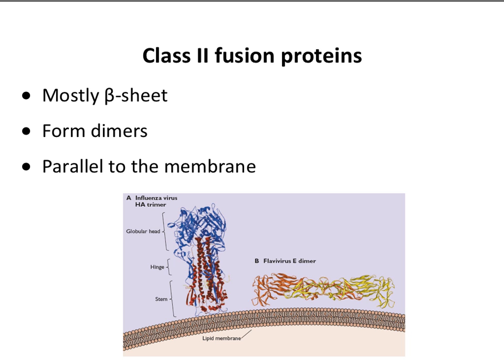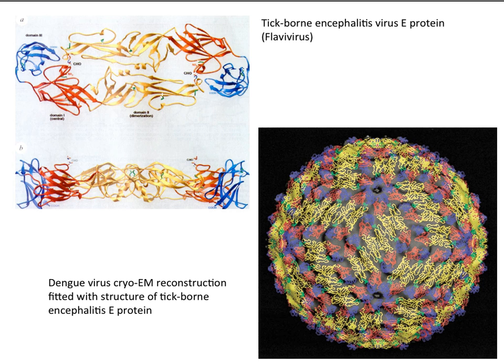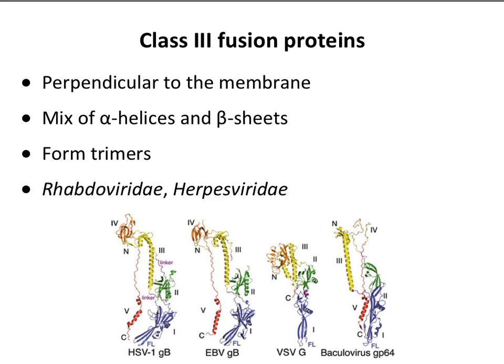There are a couple of other kinds of fusion proteins. Class 2 fusion proteins are very different — mostly beta sheets, very little alpha helices. They form dimers typically instead of trimers, and they are parallel to the membrane — in contrast to the influenza HA and other type 1 fusion proteins. Here is dengue virus with type 2 fusion proteins lying on its surface. There are also type 3 fusion proteins, which like the HA of flu are perpendicular to the membrane. They tend to be a mix of alpha helices and beta sheets, also form trimers, and you find these in rabies and herpes viruses.